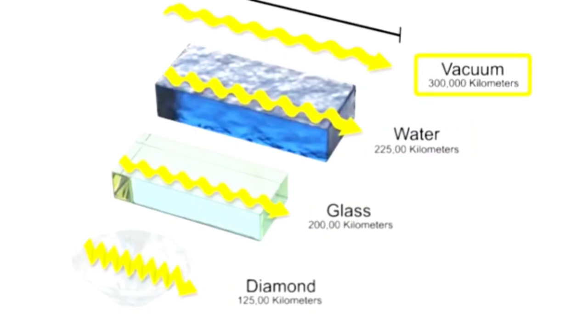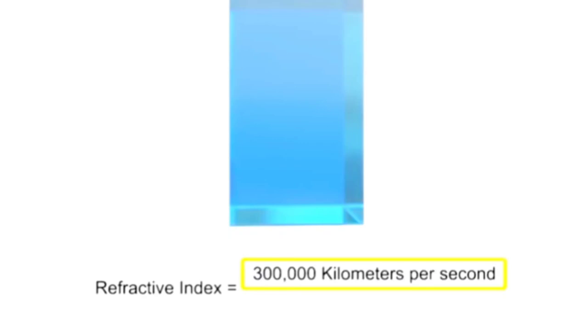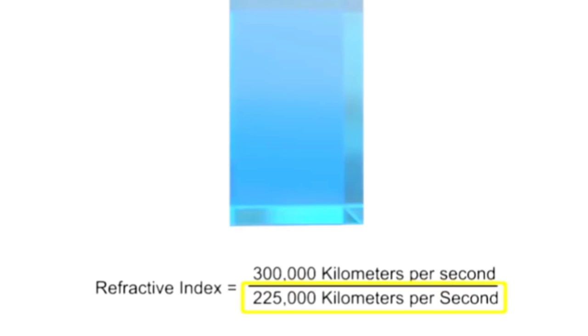This is the speed at which light travels in a medium compared to light traveling in a vacuum. For example, typical glass has a refractive index of 1.33. This is calculated by dividing the speed of light in a vacuum, 300,000 kilometers per second, by the speed of light in glass, 225,000 kilometers per second.